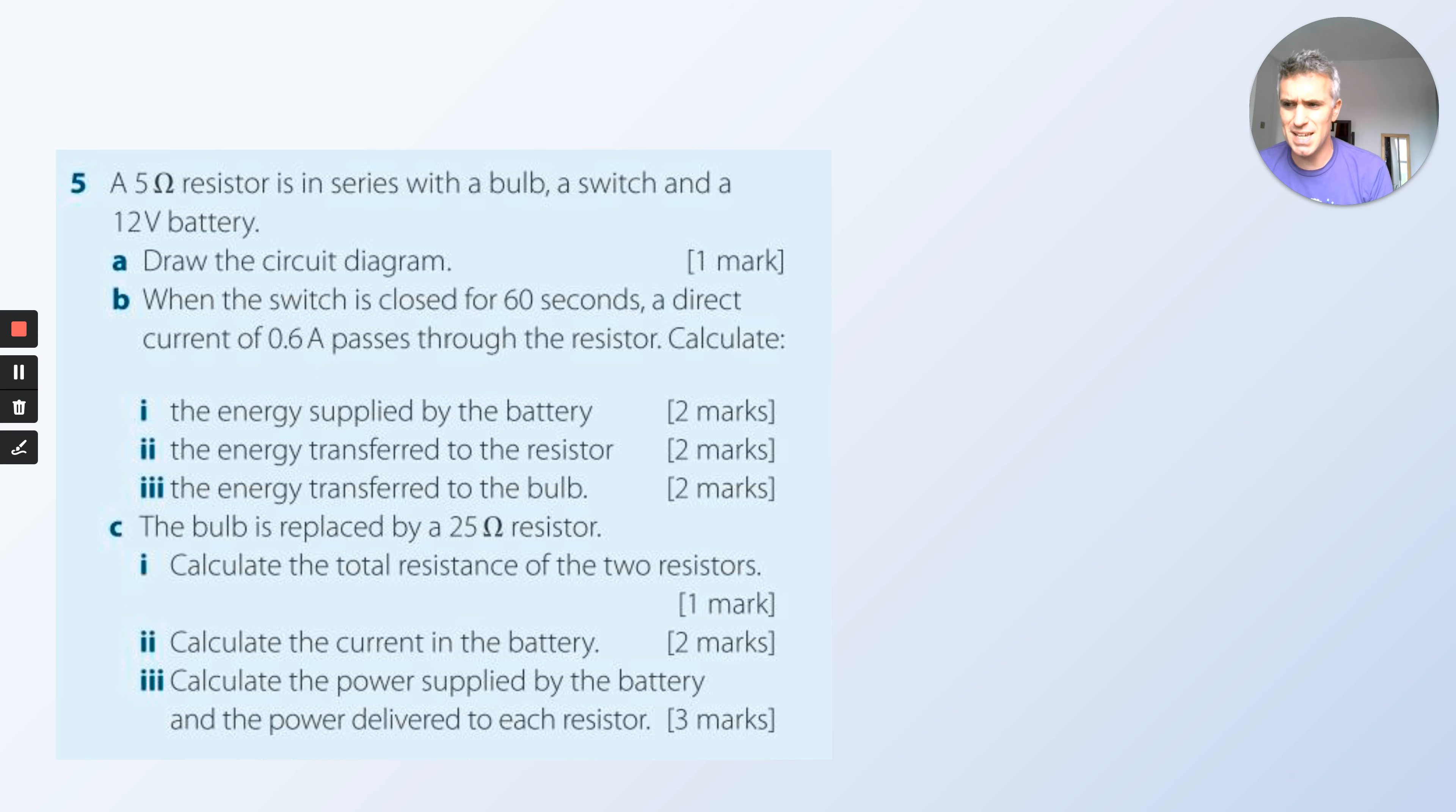A 5 ohm resistor is in series with a bulb, a switch, and a 12 volt battery. Draw the circuit diagram. Easy, you remember the symbols for those. When the switch is closed for 60 seconds, a direct current of 0.6 amps passes through. Calculate the energy. You might have to do an equation before that. Remember, you could do power, or you could do charge. Charge is current times time. There were loads of them. You know these equations. You might have to do more than one equation to get to the end.